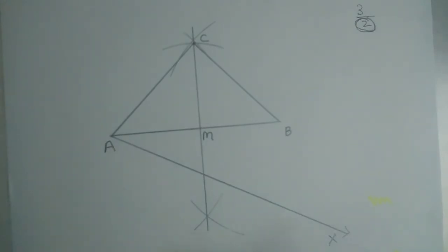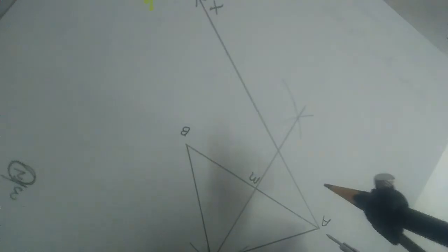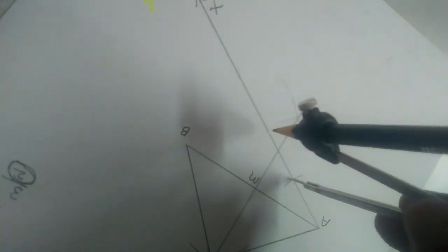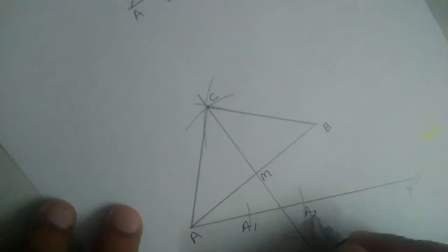So denominator in our case is 2. So we will draw 2 arcs now of equal radii. 1 and 2. Let us name them. This is A1, this is A2.